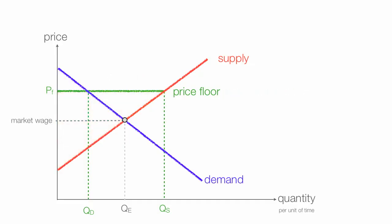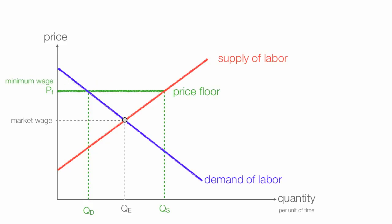Another type of price floor is minimum wage. We have a supply of labor, which are workers, and a demand for labor, which are businesses. Minimum wages are generally above the market wage. At the higher wage, there's a surplus of workers — this is also known as unemployment. Quantity supplied of labor, which are workers, is greater than quantity demanded of labor, which is how much businesses want to hire. The difference between quantity supplied and quantity demanded is unemployment.